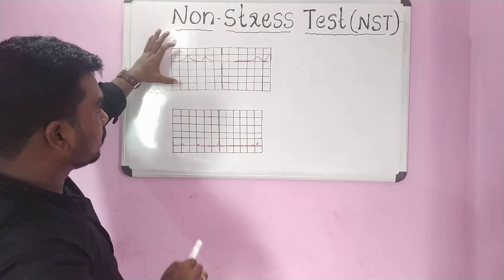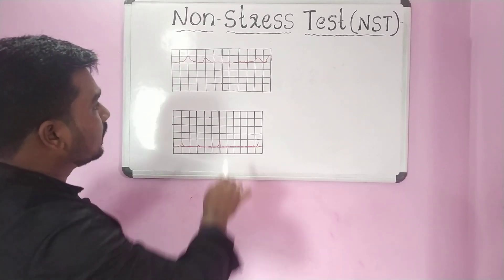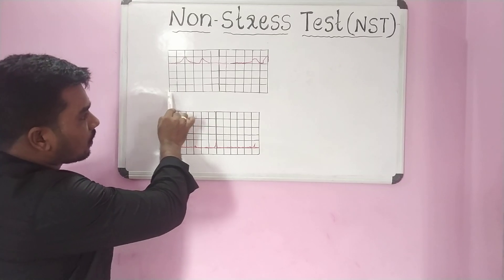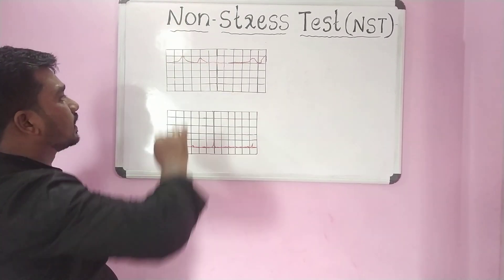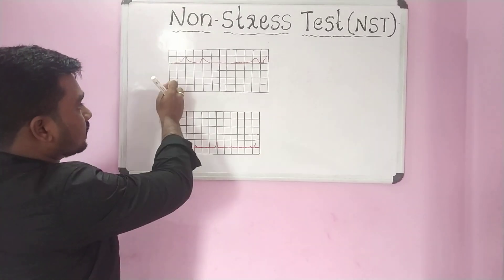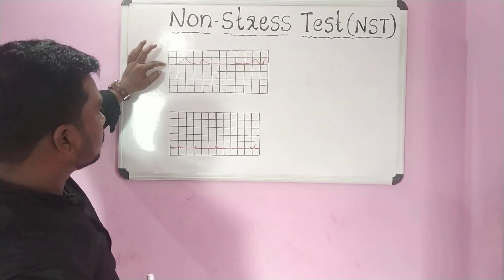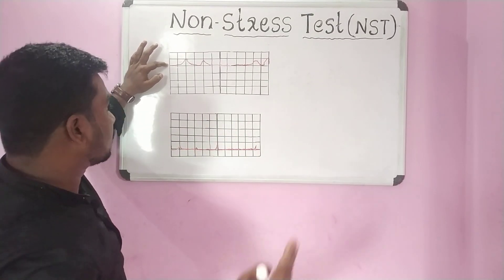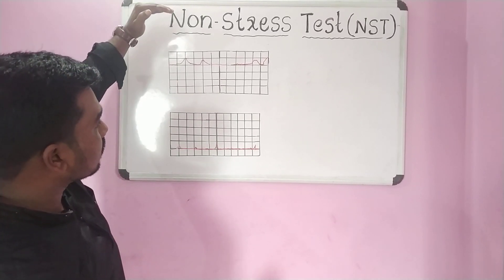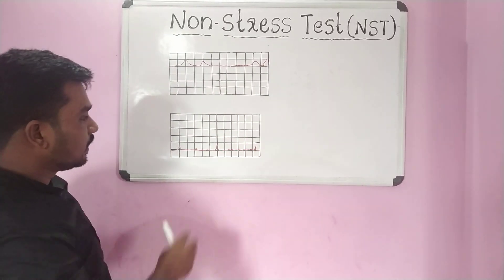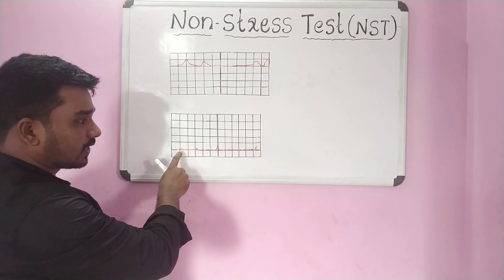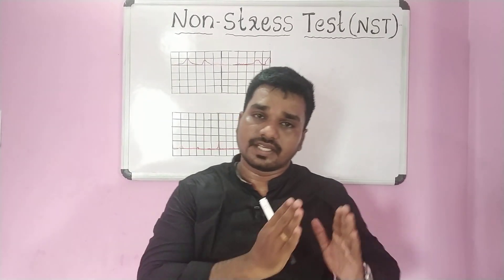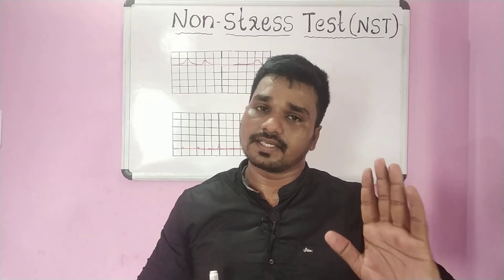This is called a Cardiotocograph (CTG). The cardiotocograph has two parts: the top part displays the FHR picture in beats per minute, and the second part of the graph shows the uterine contractions measured in mmHg (MOCG). This graph records both FHR and contractions together as a tracing.